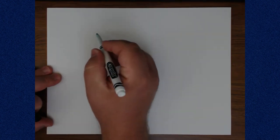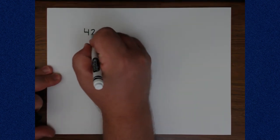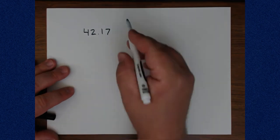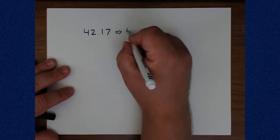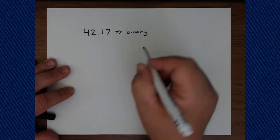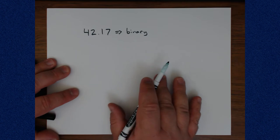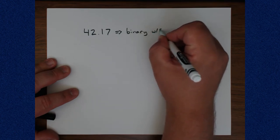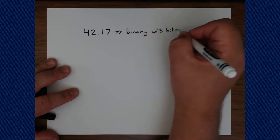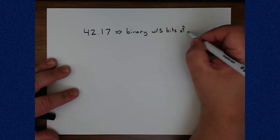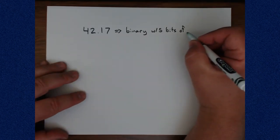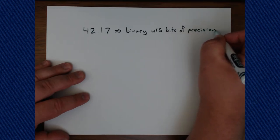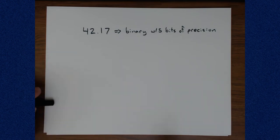So let's say someone comes up to you and says, what's 42.17 converted to binary? And you, being keenly aware of how binary works and how computers work, say, well, how many bits of precision do you want? Because I can only store so much. And so they say they want five bits of precision. What that really means is how many bits past the radix point, and of course we would have to combine the total number of bits of our representation.